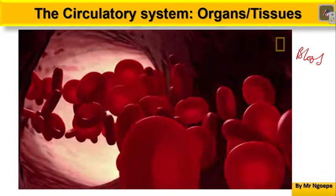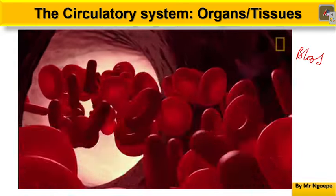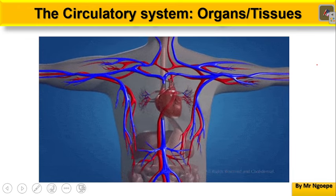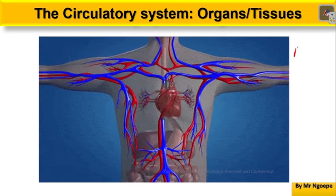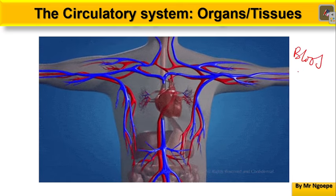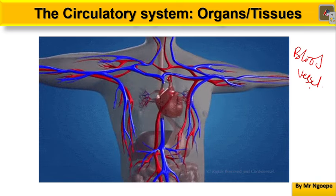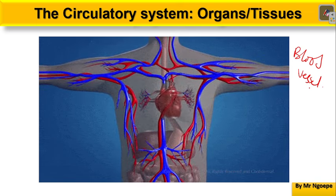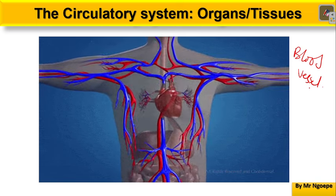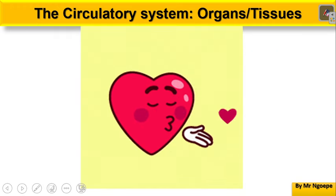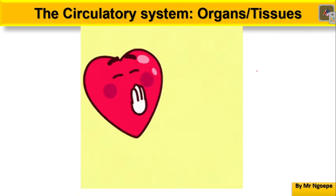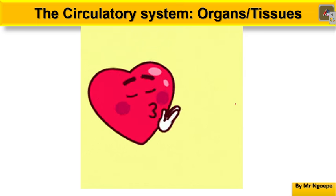Blood will be the vehicle that transports everything — it's like your logistics company. Then we'll need roads where those vehicles can actually travel, and that will be your blood vessels. Remember, vessel means a container, so all of these tubes in your body that contain blood are known as blood vessels — the roads for the blood to move around. And then you are going to need a heart for your circulatory system to function properly.